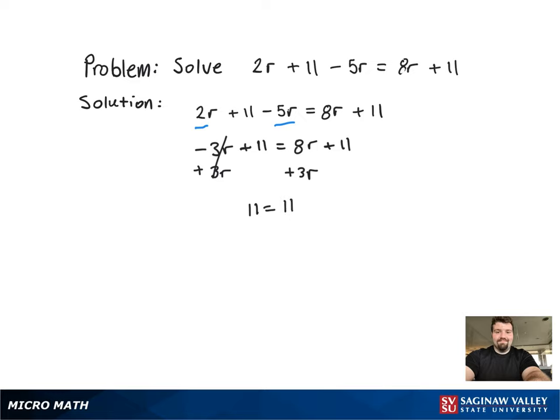Now we only have r on the right side of the equation, but we want to get all the constants to just the left side, so we'll subtract 11 from both sides.